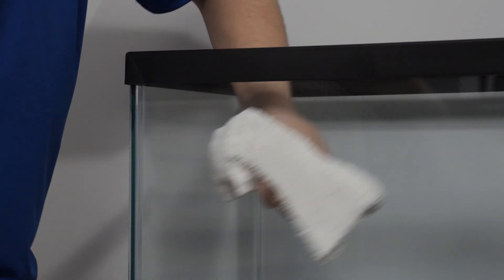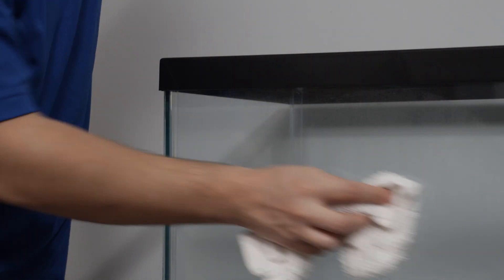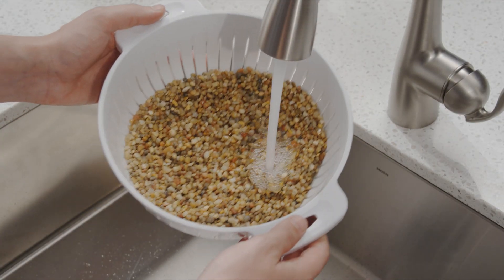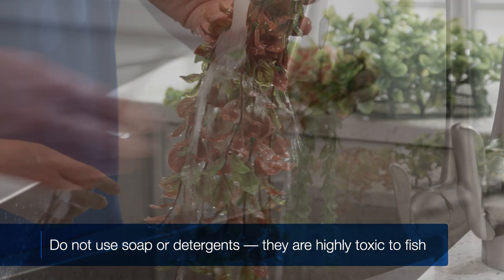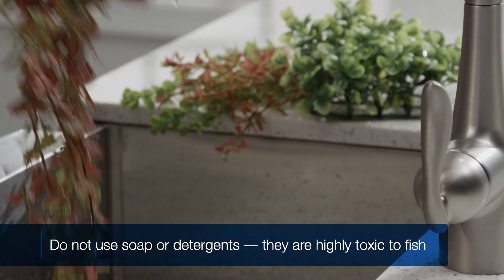To start, wipe down your aquarium inside and out using a soft, damp cloth. Then, thoroughly rinse your gravel, plants, and decorations. Do not use soap or detergent when cleaning. Both are highly toxic to fish.